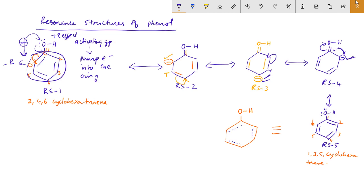RS2 will compare it to this position. We have a minus charge, so we put delta minus here. RS2 also shows a bond form on this side. So here is a double bond. RS3 will compare it to this position — here is a bond form, and we will draw a negative charge. We will draw a double bond here.